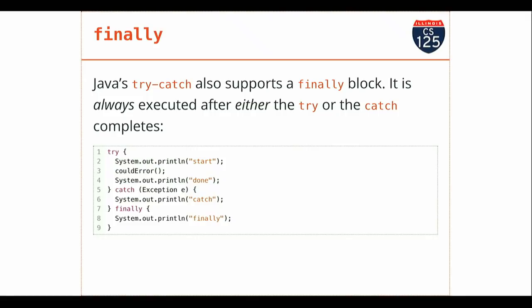Not only do I have a try-catch block in Java, but I also have this last clause I can add — it's optional. The catch clause is not optional: if you open up a try block, you have to have at least one catch. Finally is optional. What's cool about finally is that the code in the finally block is always executed — it gets executed if I get all the way through the try statement without generating an exception, and it gets executed even if I generate an exception and exit the catch block. Finally is always the last thing that happens.